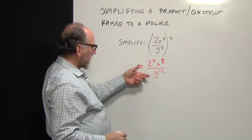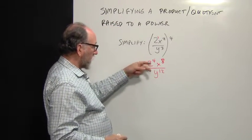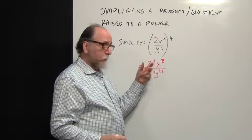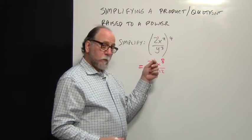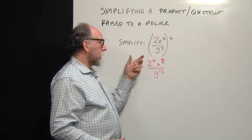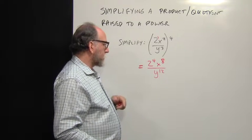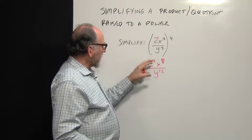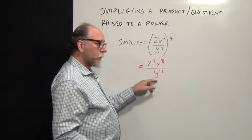So now we just need to simplify this any further. Well, there are no negative exponents, and remember, if there were negative exponents, the instructions, which I didn't write here, would say express with positive exponents. So we don't have to worry about the x to the eighth or the y to the twelfth.